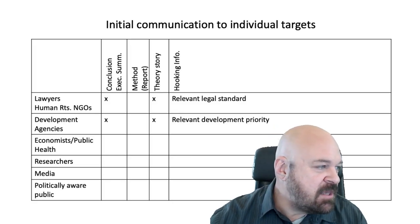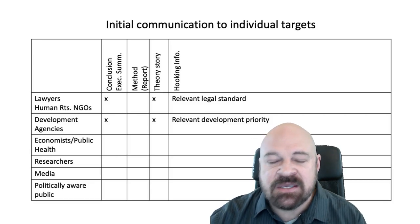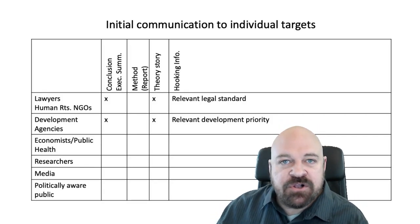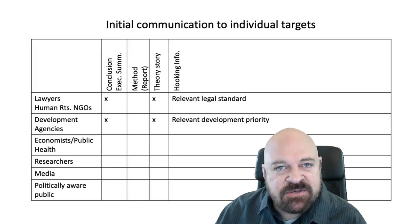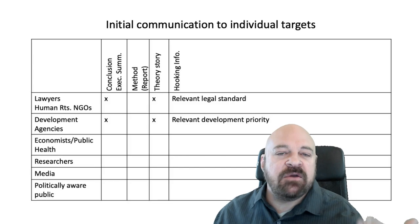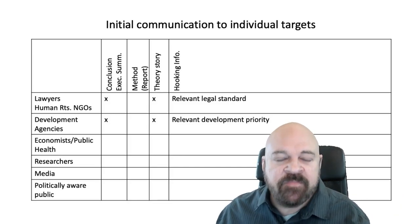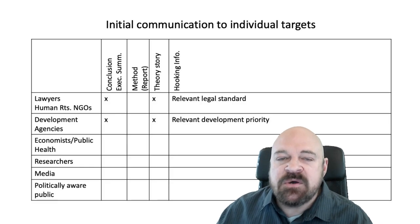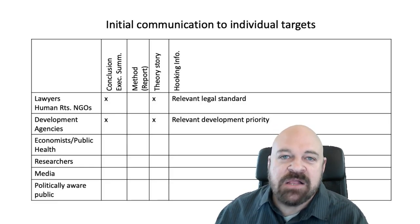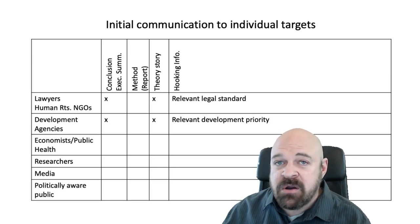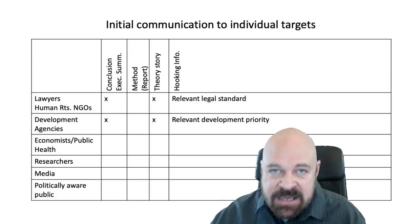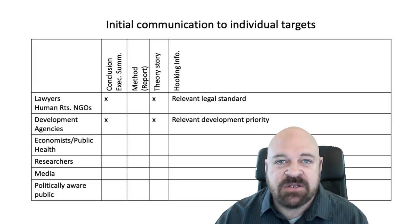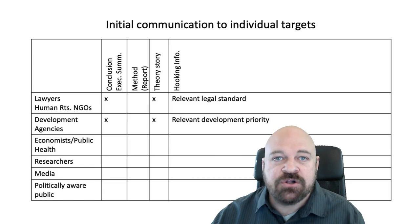The next group of people is development agencies. For development agencies, I would do a parallel thing except for development. I would include the findings and executive summary. I would include a theory story because development agencies are also concerned with population-level outcomes — so if your theory story tells a story of an individual person or a group of people, the development practitioner can fit it into what their work is. But you also want to relate your information to the relevant development priority. Whereas for attorneys you would go into the legal standard, here you would look at the priorities of the development agency you're dealing with and identify which one is most relevant to your research and include that in your approach.